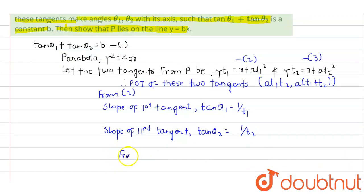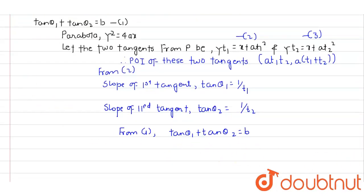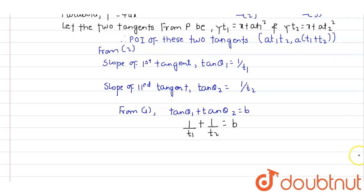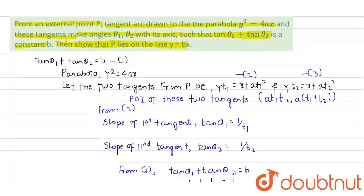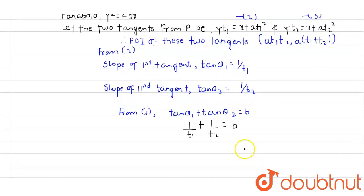From equation 1, tan θ₁ + tan θ₂ = b. Plugging in the values, 1/t₁ + 1/t₂ = b. Rewriting this, we get (t₁ + t₂)/(t₁t₂) = b.